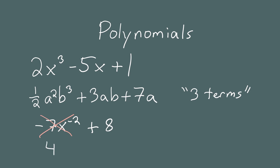The next example is 4 times y to the 2.5 plus 2y plus 1. This expression has three terms. The first term, 4 times y to the 2.5, is close but not a monomial — it's a number times a variable to a positive exponent, but that exponent is not an integer. The second term, plus 2y, is a monomial: a number times a variable to a positive integer exponent. And the third term, 1, is also a monomial since it's just a number. But because the first term fails, the overall expression is not a polynomial.